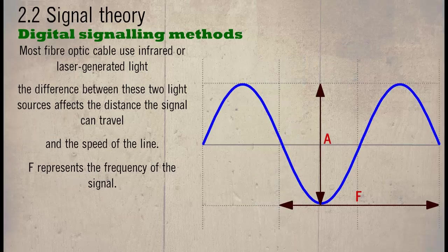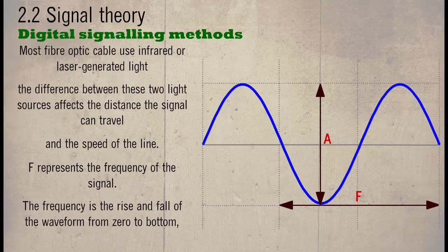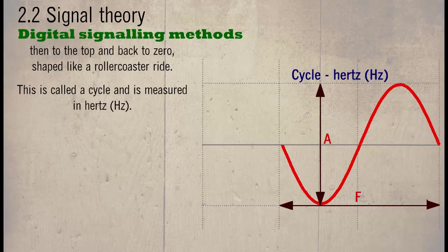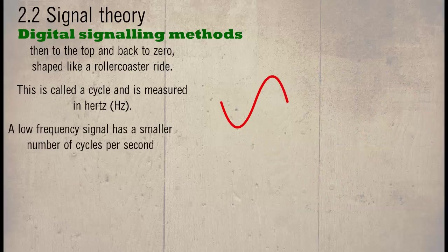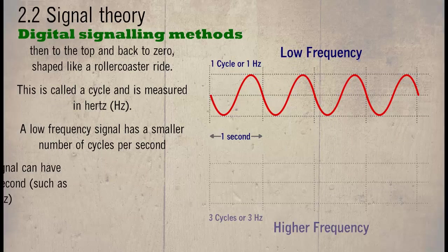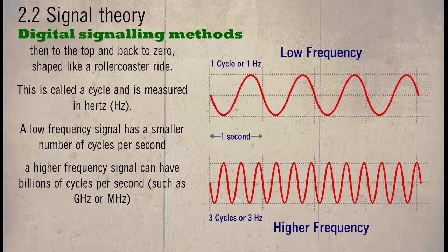F represents the frequency of the signal. The frequency is the rise and fall of the waveform from zero to bottom, then to the top and back to zero. A low frequency signal has a smaller number of cycles per second. A high frequency signal can have billions of cycles per second such as gigahertz or megahertz.